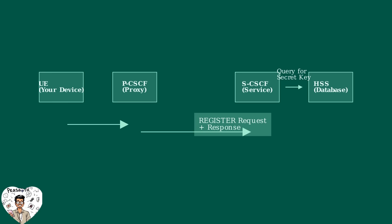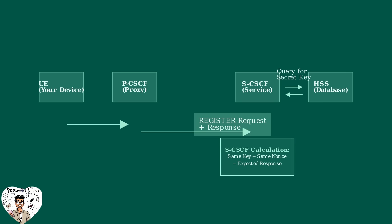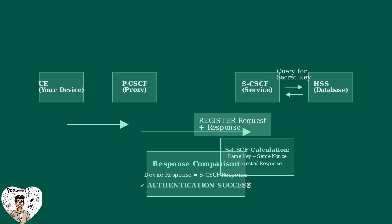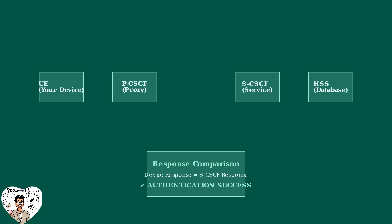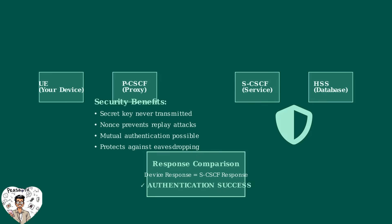Now the SCSCF must validate this response. It queries the HSS database to retrieve the same shared secret key that your device used — the HSS securely stores all user authentication credentials. The HSS sends back the secret key to the SCSCF, which then performs the exact same calculation, combining the secret key with the NONCE using the same algorithm. Finally, the SCSCF compares its calculated response with what your device sent. If they match, authentication succeeds. This mechanism is brilliant because it proves identity without ever transmitting the secret key over the network, and each NONCE is used only once to prevent replay attacks.